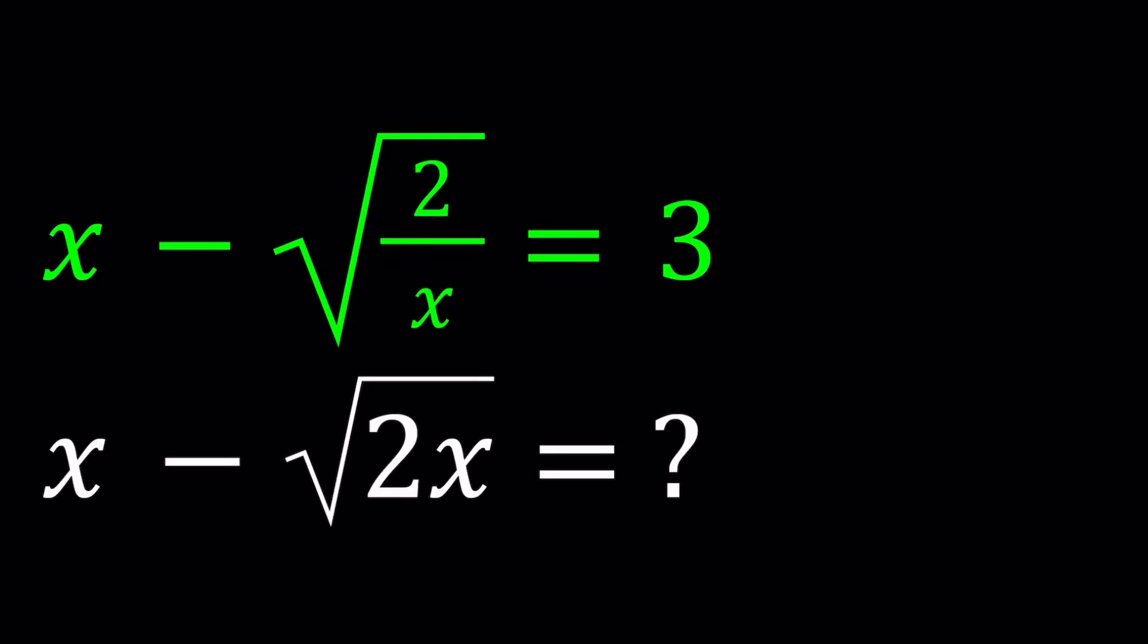Hello, everyone. In this video, we're going to be dealing with a radical equation. We have x minus the square root of 2 over x equals 3, and for those values of x for which the first equation is true, we're supposed to evaluate an expression which is x minus the square root of 2x. So based on the values we find from the first equation, we're going to find the value of the second expression.